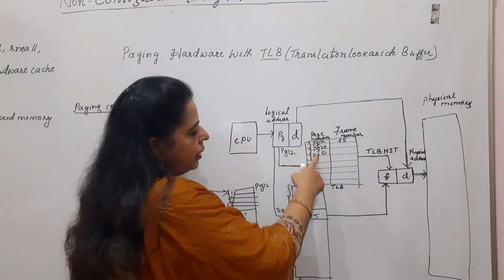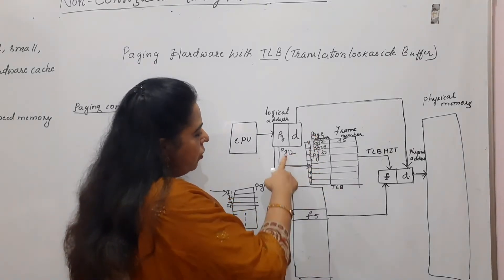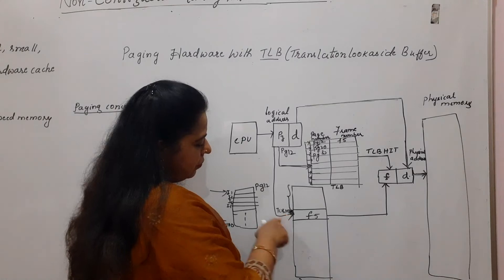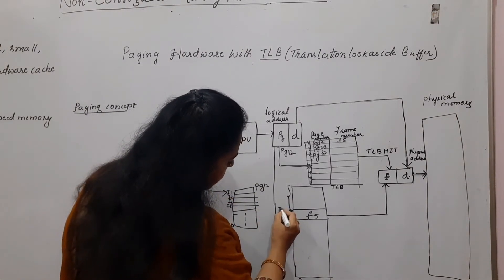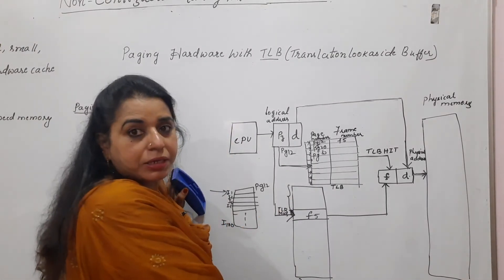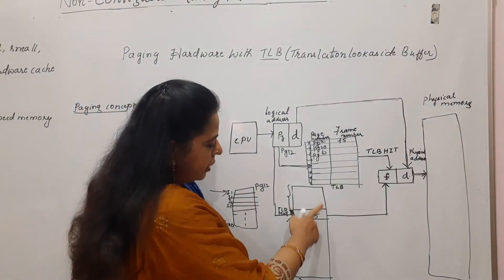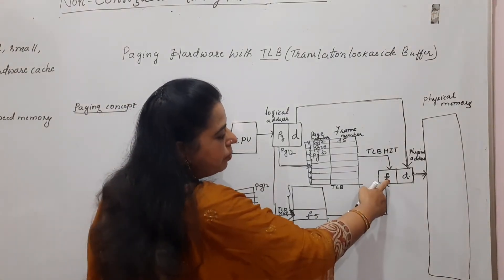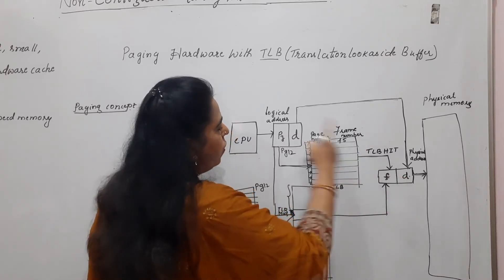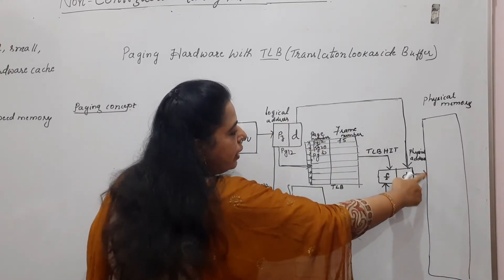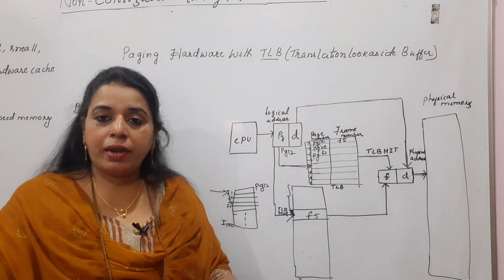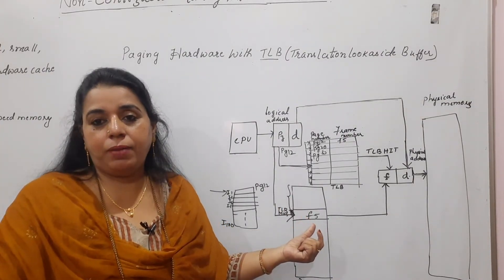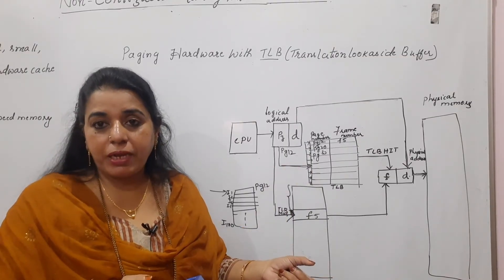If that particular page is not found in the TLB, we call it a TLB miss. Then it is searched in the page table. Once the entry is found in the page table, the frame number is added to the offset of the logical address, and the physical address is generated. This is how we reduce the access time that was higher in the basic paging technique.